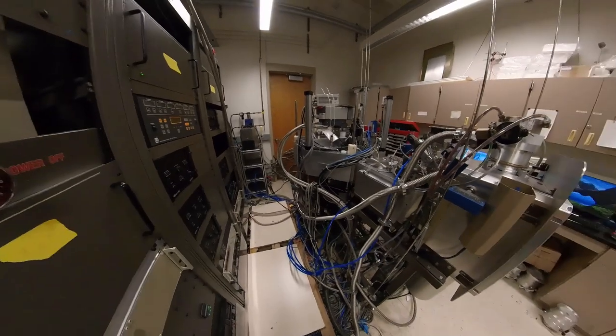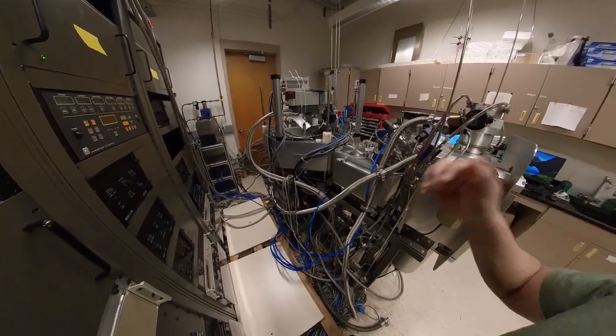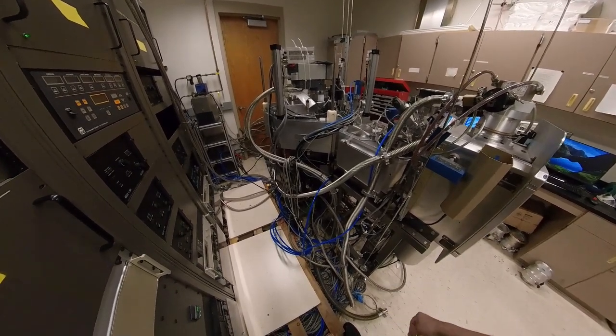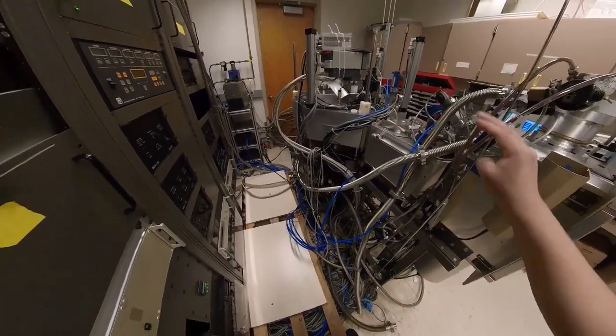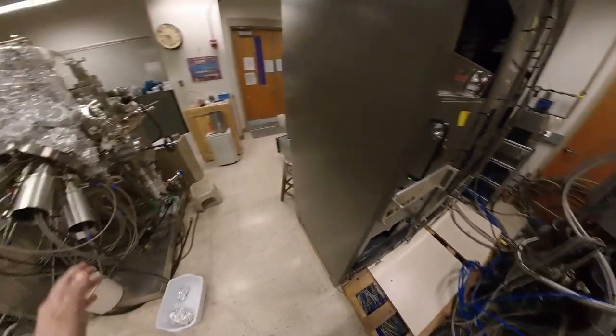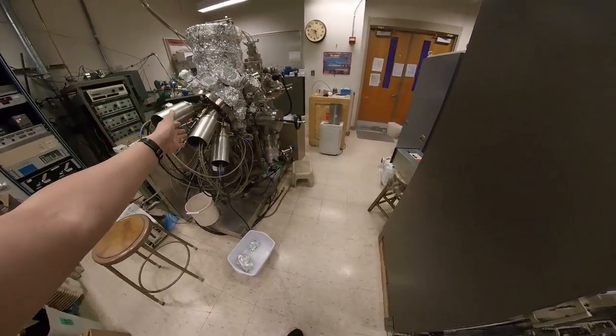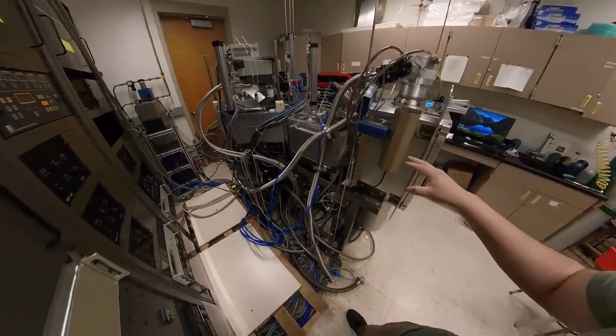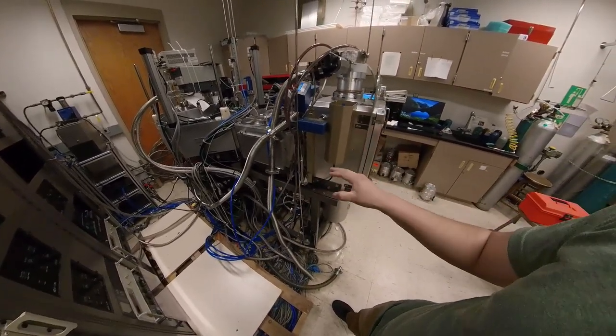This magnetron sputtering chamber is what we call a facing target magnetron sputtering chamber. And this one has more moving parts. The one on this side does not have as many moving parts in it. However, this one has robotic components in it.